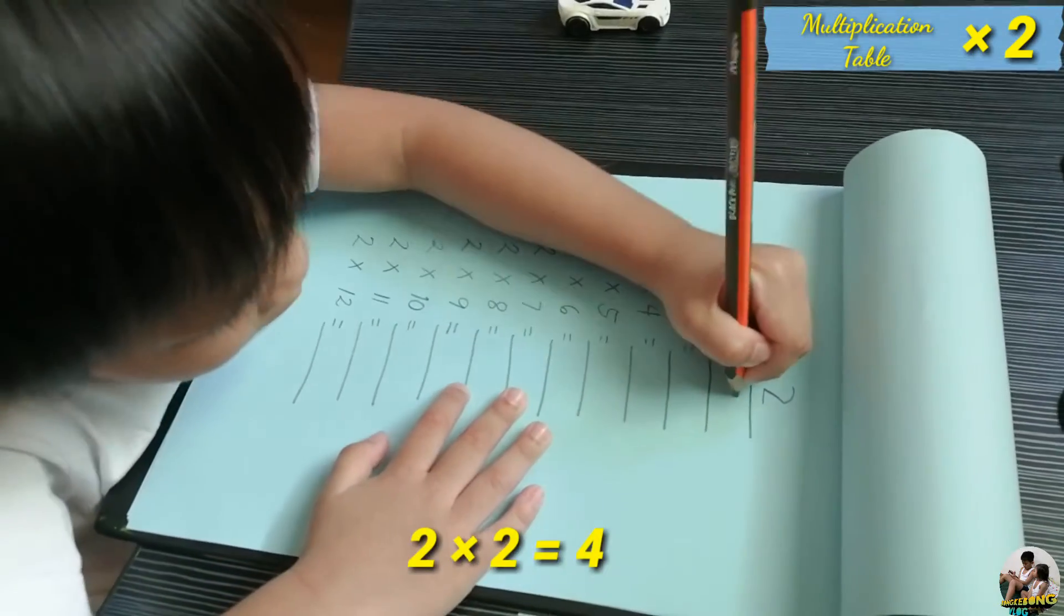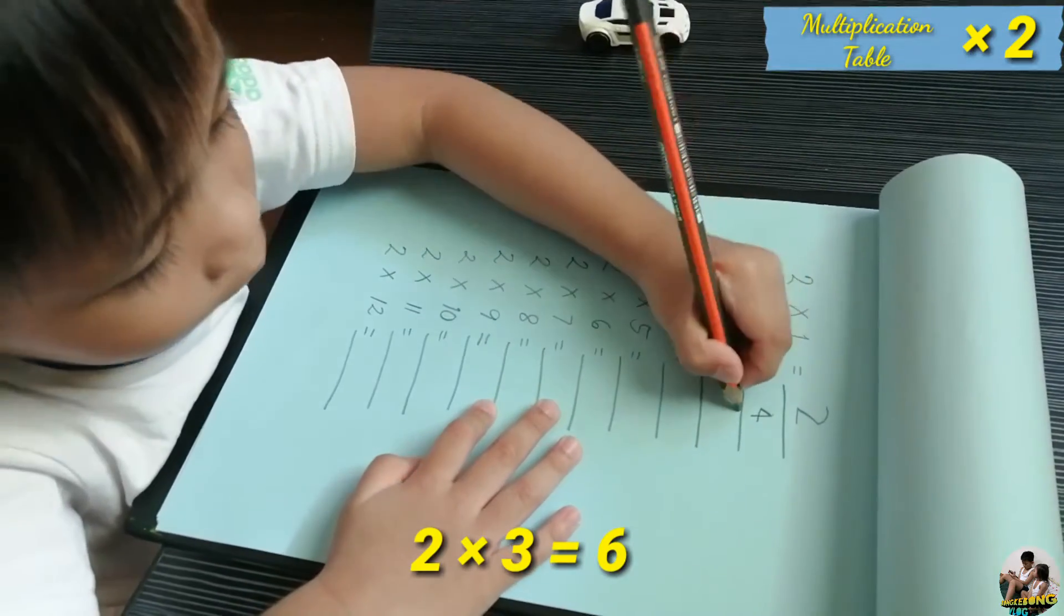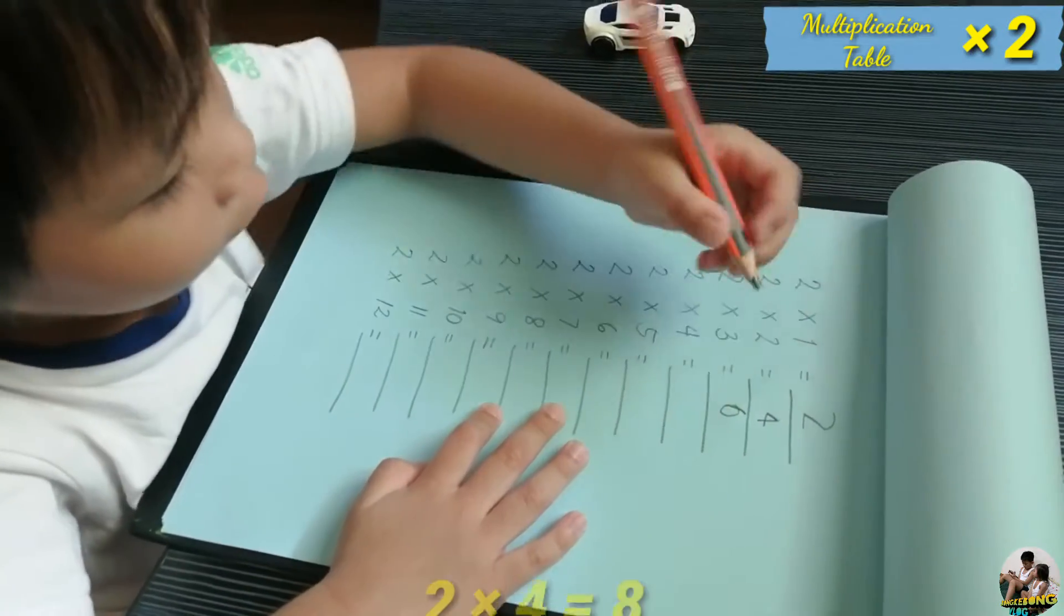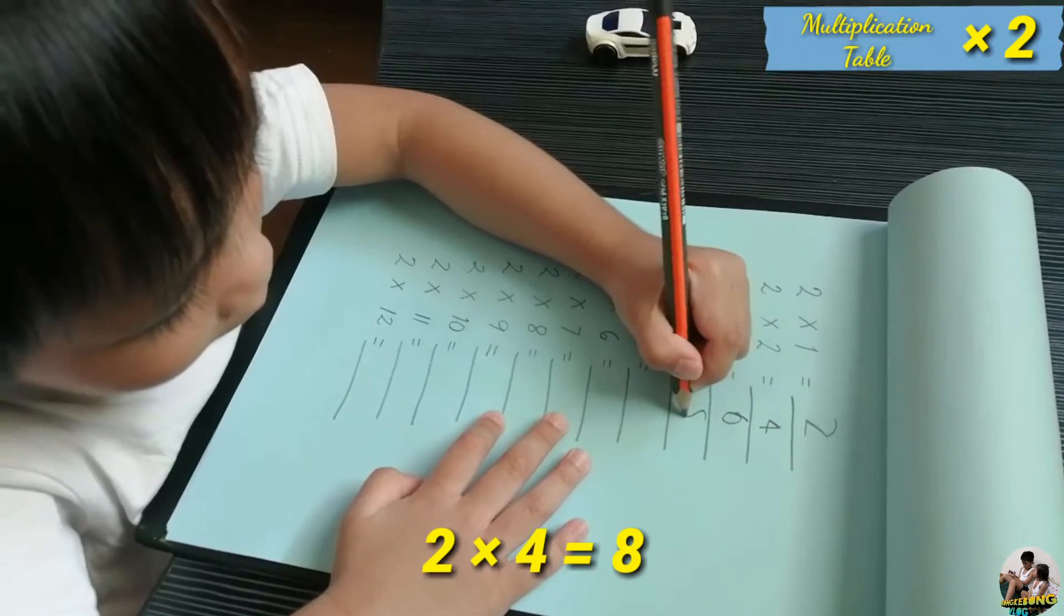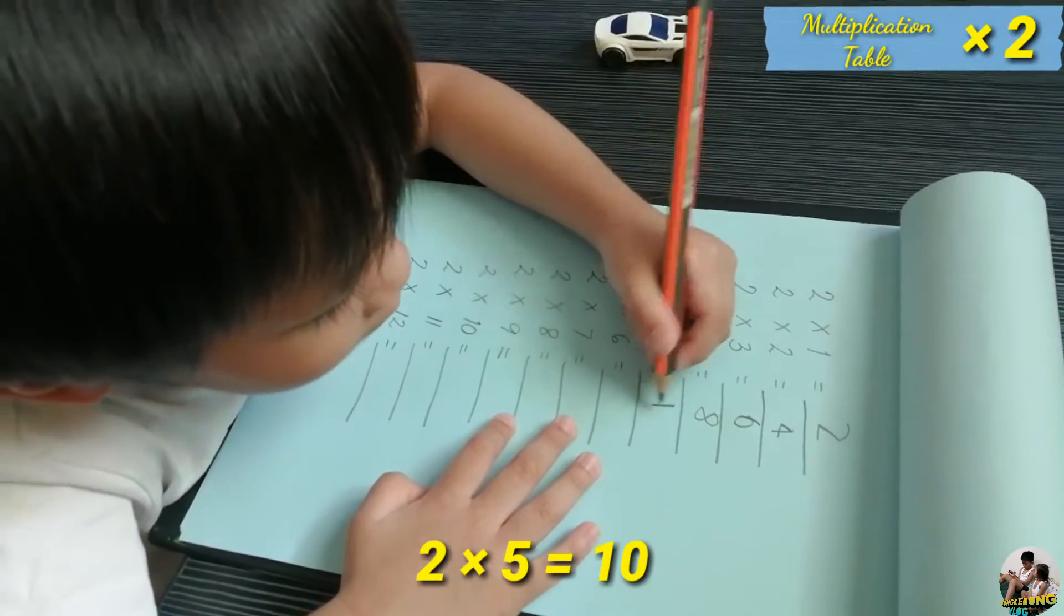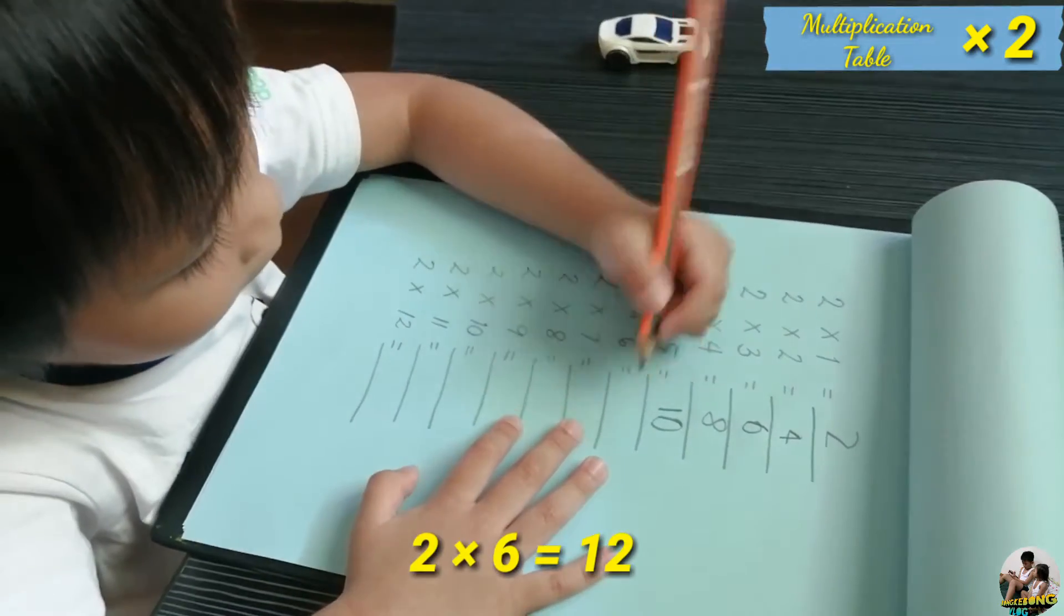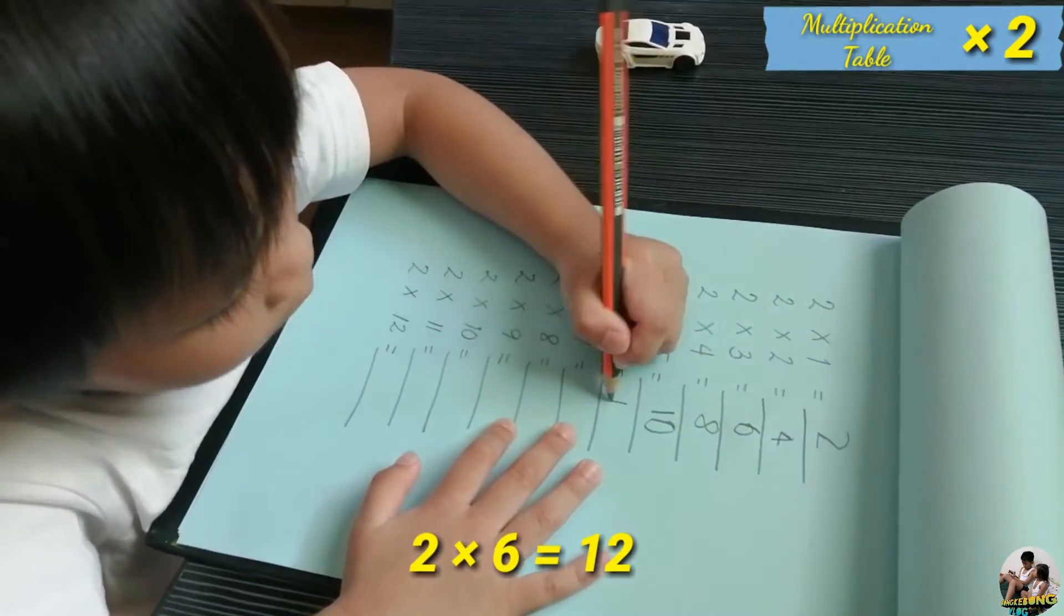Two times two equals four. Two times three equals six. Two times four equals eight. Two times five equals ten. Two times six equals twelve.